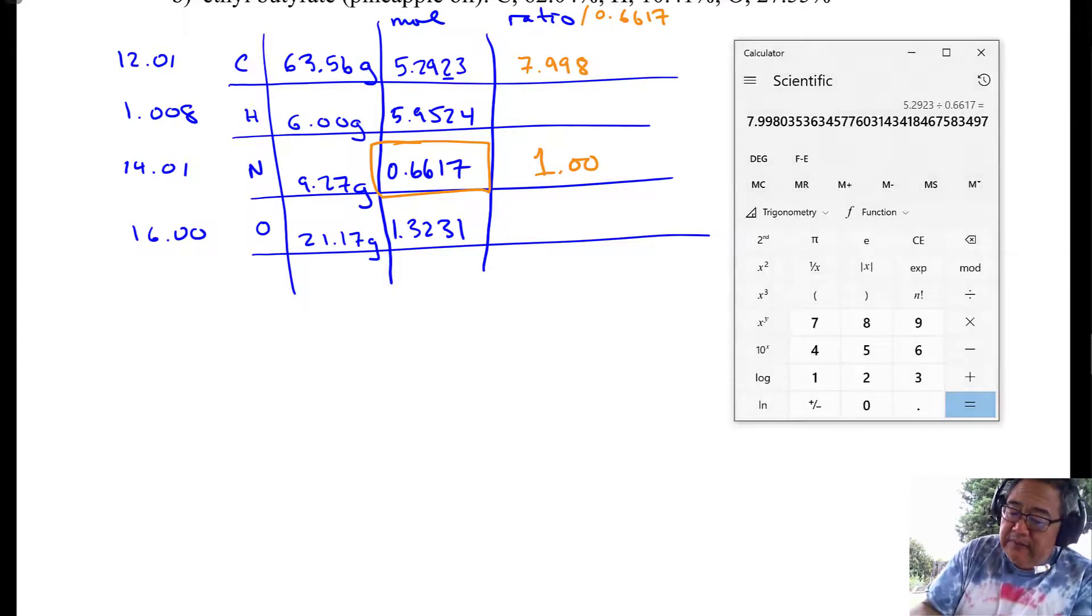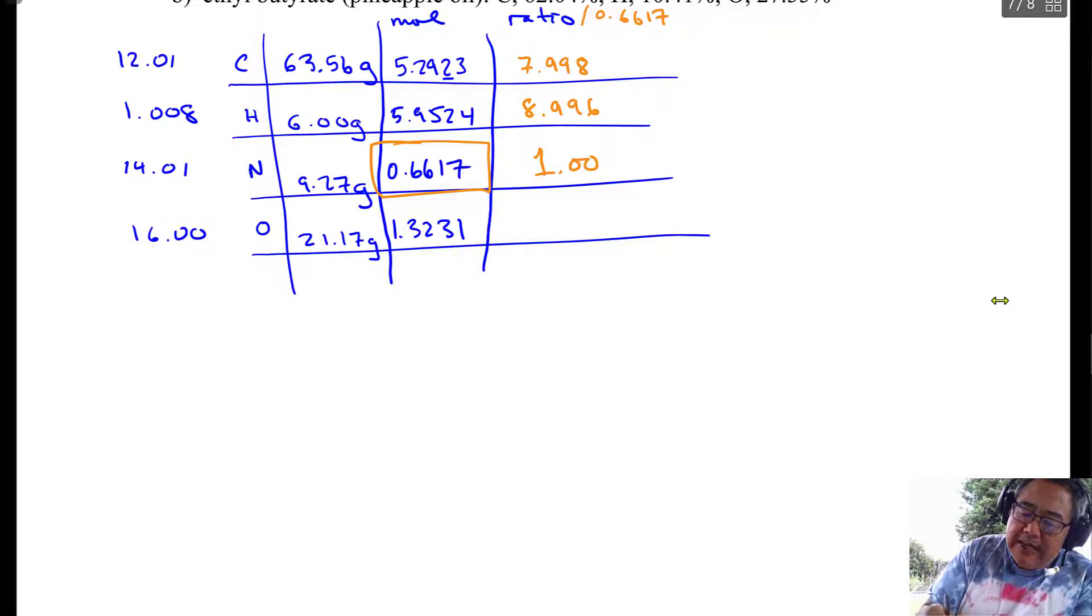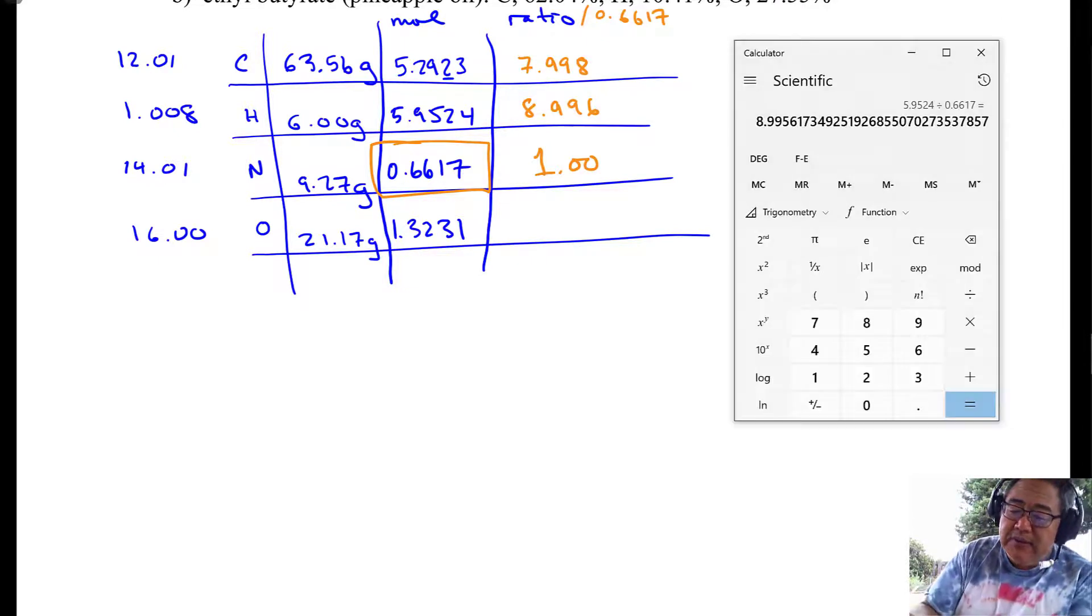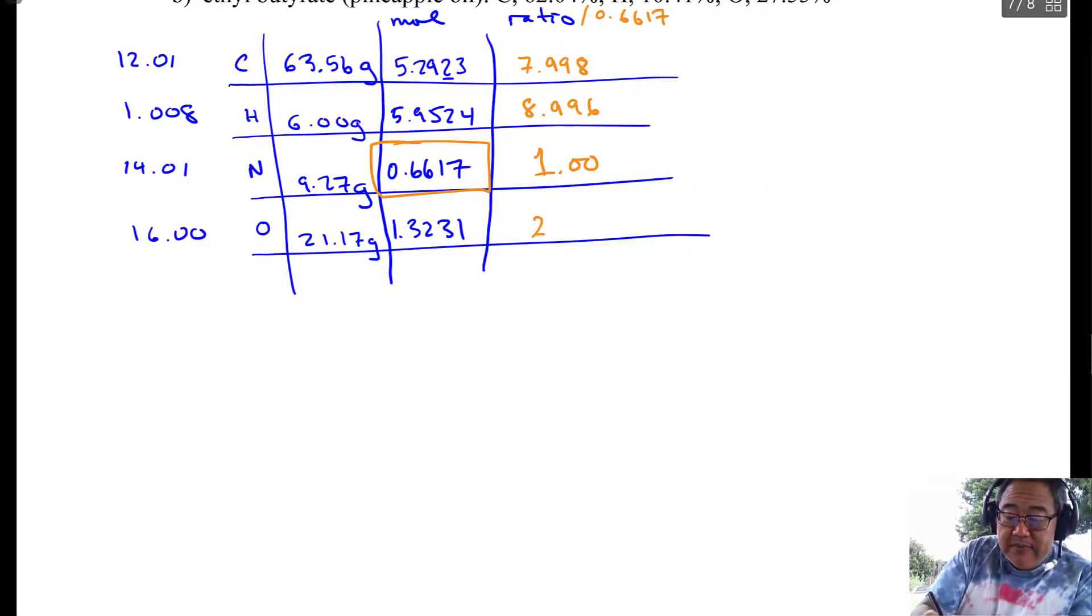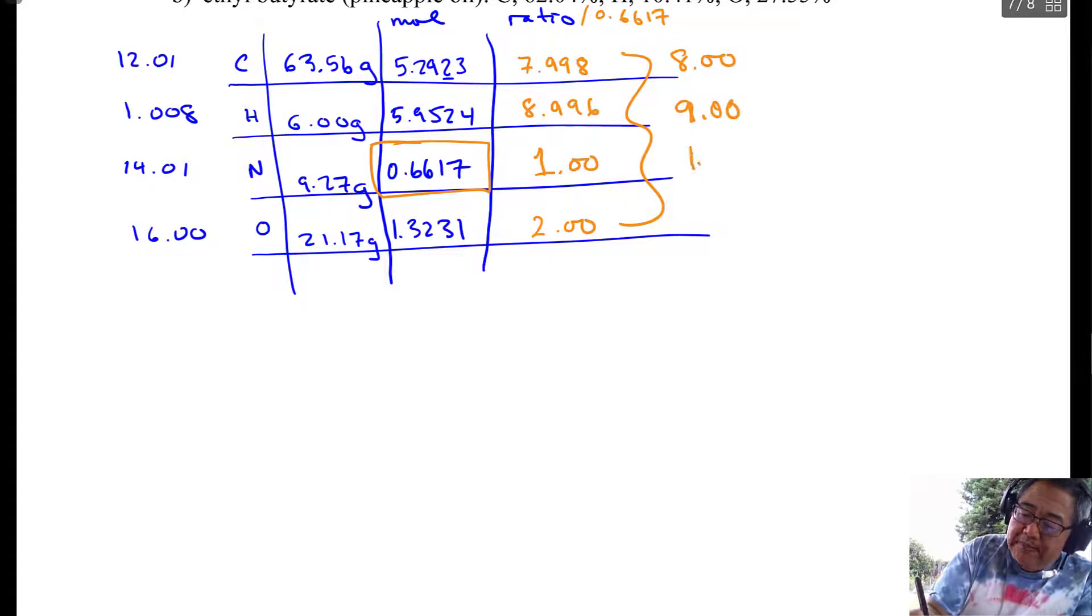And then I'm going to do 5.9524 divided by 0.6617. And I get 8.996. And then the last one, hopefully, will come out to be a whole number. And then I'll be almost done. So then I'll go 1.3231 divided by 0.6617. Like that. And I'll get exactly 2. So what that means, these numbers are roughly 8.0, 9.0, 9.0, 1 and 2.